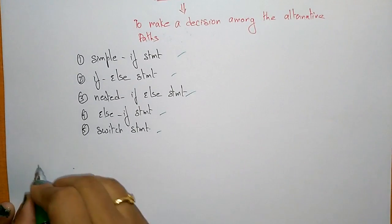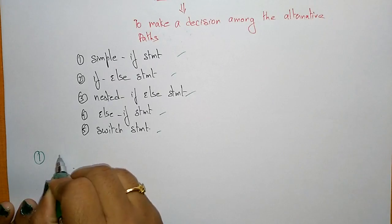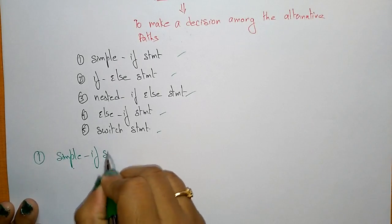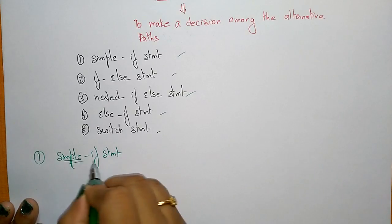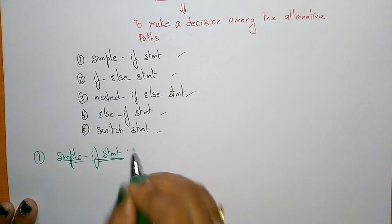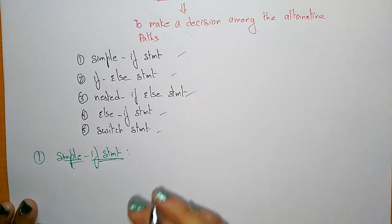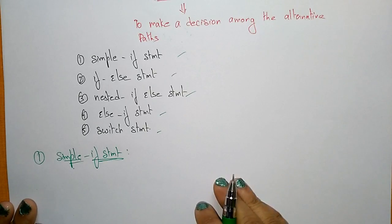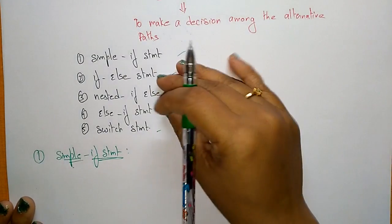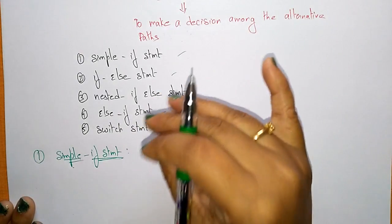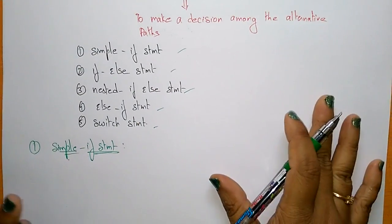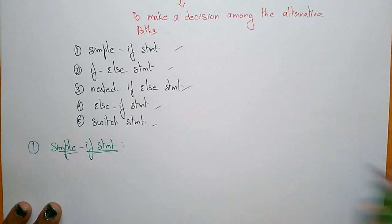Now let us see them one by one. The first is the simple if statement. I will explain what an if statement is, and write the syntax, flowchart, and program for it. For each statement, I will cover syntax, flowchart, and program.